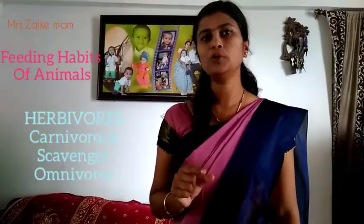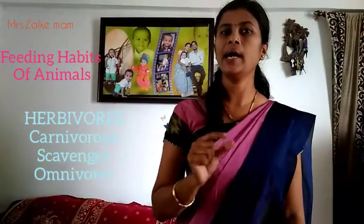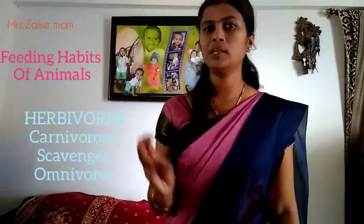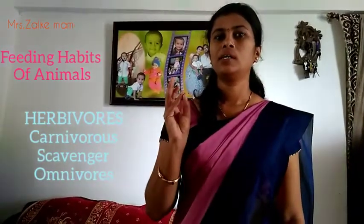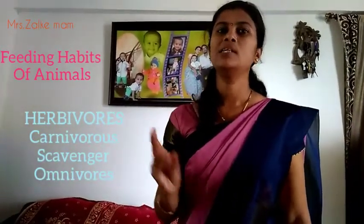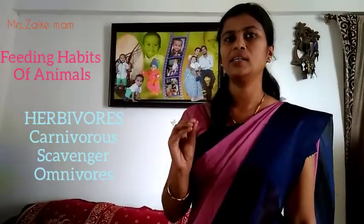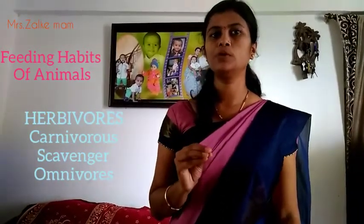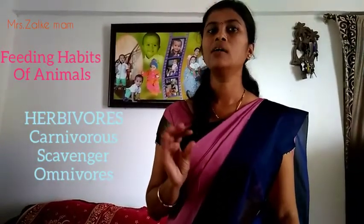In short, the summary of the video is: according to their different feeding habits, animals are divided into four groups — herbivorous animals, carnivorous animals, scavengers, and omnivorous animals.